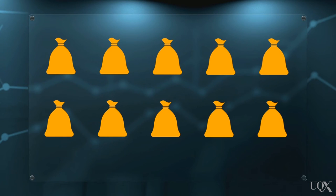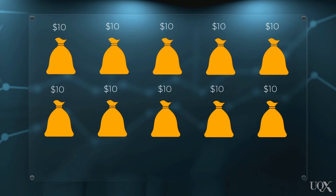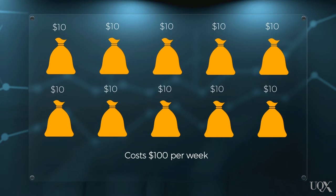Imagine your household generates 10 kilograms of garbage every week. The government decides to introduce a waste levy, and now you have to pay $10 for each kilogram of waste — that's $100 per week. Now that every kilogram of garbage is costing your household money, it's in your best interest to avoid that cost by reducing the amount of waste you generate.